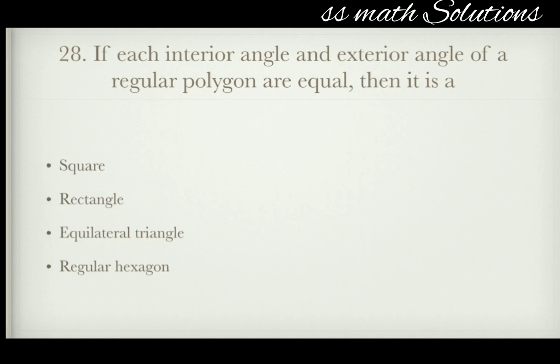If each interior angle and exterior angle of a regular polygon are equal, then it is a — square, rectangle, equilateral triangle, or regular hexagon? For a square, each interior angle equals each exterior angle at 90 degrees. The answer is square.